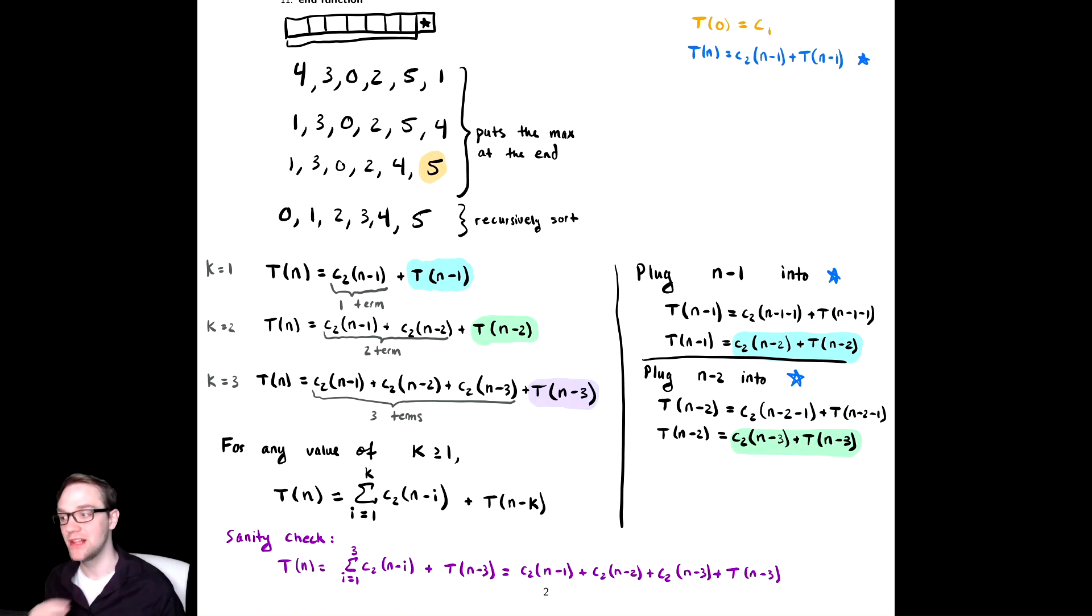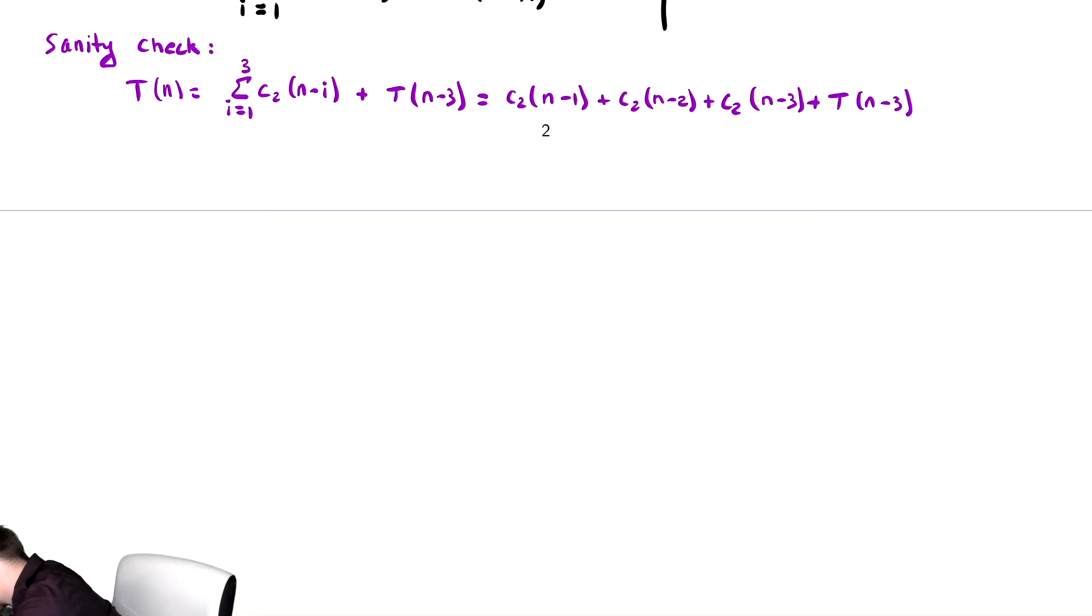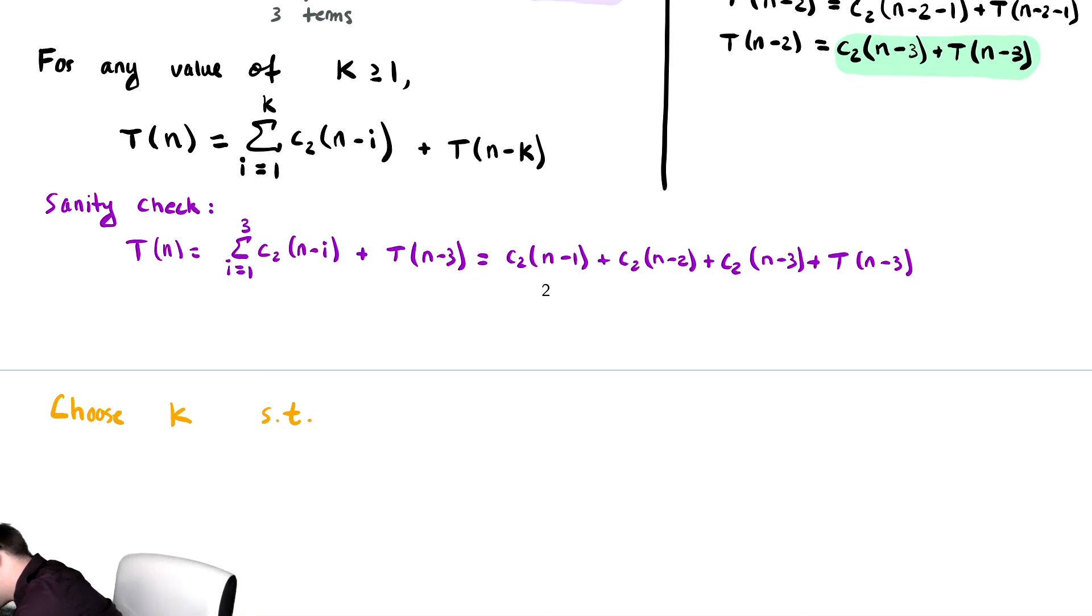Now we need to choose a value of k so that we can use that one other bit of knowledge we know. We have used this blue equation to absolute death. We still need to use the orange equation. To use the orange equation, we're going to try to choose a value of k to let us use that. If you notice, on the right-hand side, I have T of n minus k. We want to make it so that that is equal to our base case somehow. So we want to choose k such that we use the base case. Choose k such that the thing inside of T is equal to the base case. So choose k such that n minus k is equal to 0.